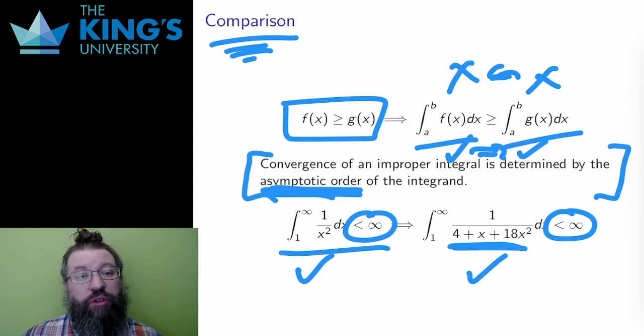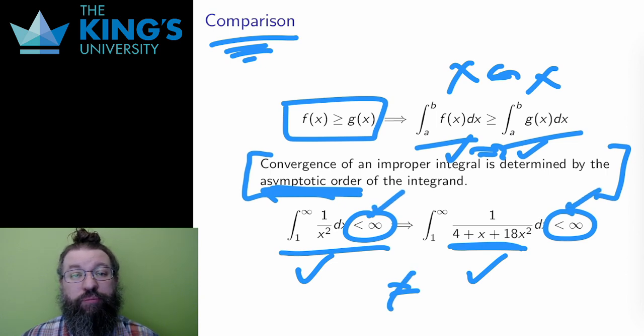The values of these two integrals are not equal, but their convergence behavior is the same. Knowing that only the asymptotic order matters can make determining convergence much easier, since a much simpler function can be produced to calculate the limit.